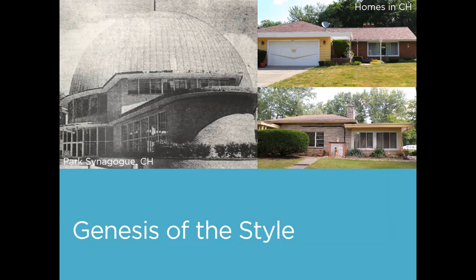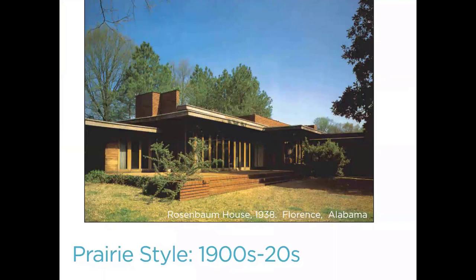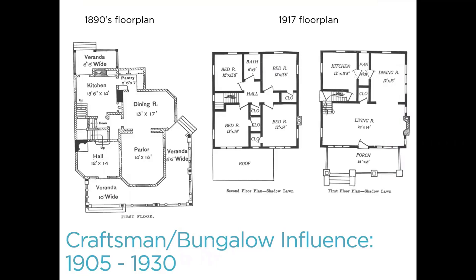We're going to talk about the genesis of the mid-century modern style — how we got to the suburbs and the houses we know now as mid-century. Early in the 19th century, Frank Lloyd Wright's prairie style led to the influence of the post-war ranch, with long horizontal lines, cantilevered roofs, and large windows that bring the outside in. Also in the early 1900s, we see the craftsman bungalow — an influential style which redefined the use of space in the home and maximized square footage.